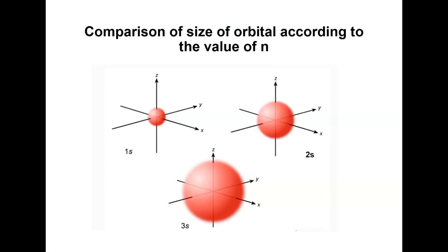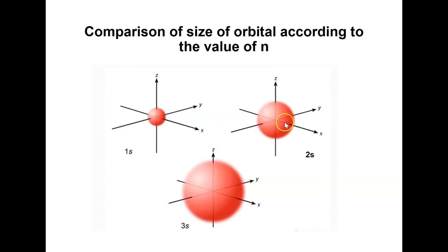Here is a comparison of orbital size according to the value of N. The size of the 1s orbital is smaller compared to the 2s orbital, and the 3s orbital has a larger size compared to the 2s orbital. The higher the value of N, the larger the size of the orbital.